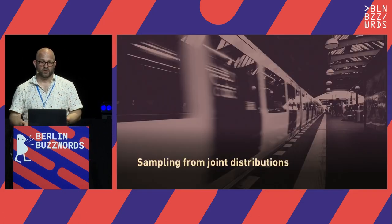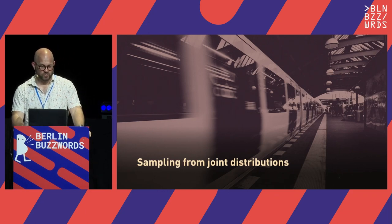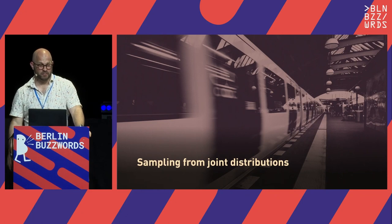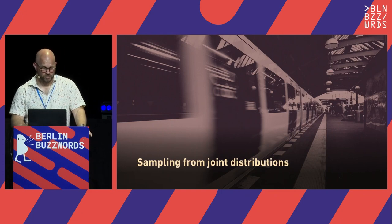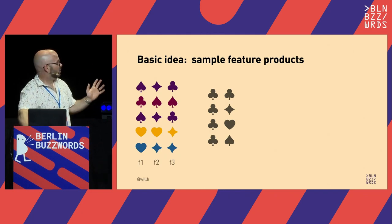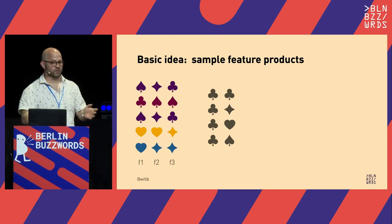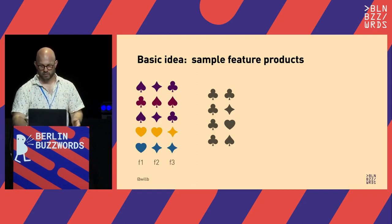The next thing I want to look at is how we can sample from joint distributions. I want to focus on joint distributions of discrete features because that's the most interesting for the bike share use case, and it's also much easier than sampling from observed joint distributions of continuous features.